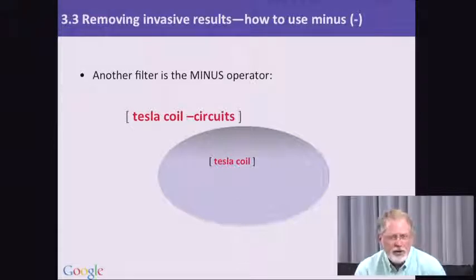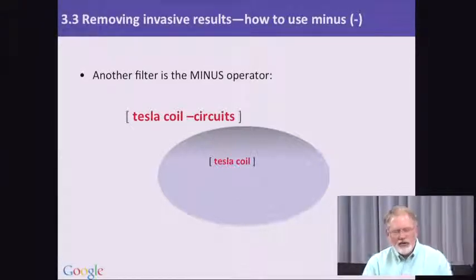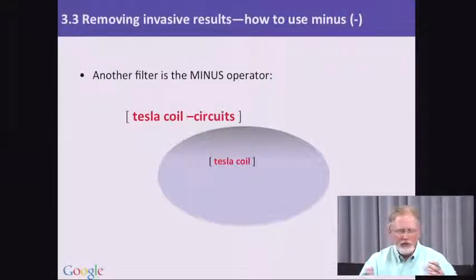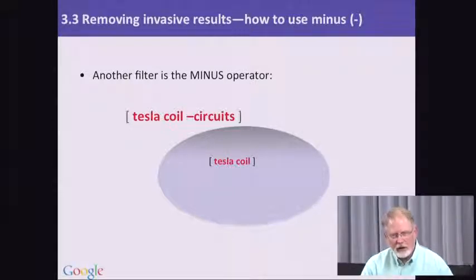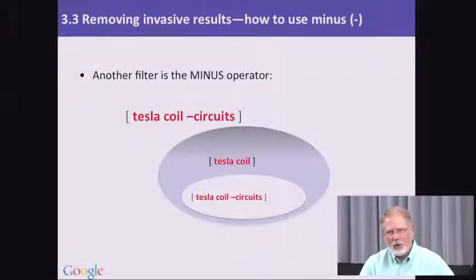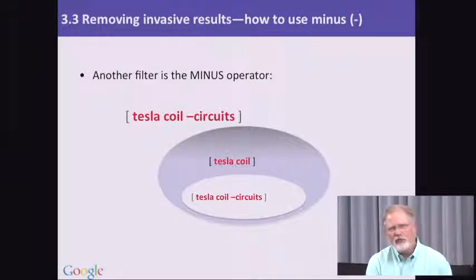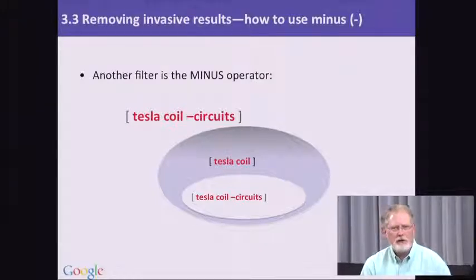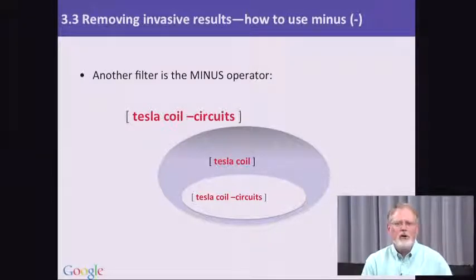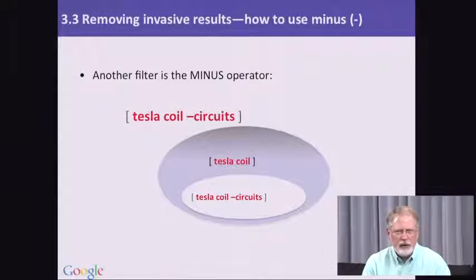Here's a little illustration to give you an idea how this works. If you imagine that oval as being the space of all possible results returned by your query 'Tesla coil', when you add 'minus circuits' to that query, what it does is knock a hole by taking away all the web pages — all the results that have the word 'circuits' somewhere in it. So what minus is really doing is figuring out a way to exclude results — erasing or filtering down from all the possible results to just the ones you want without that idea.